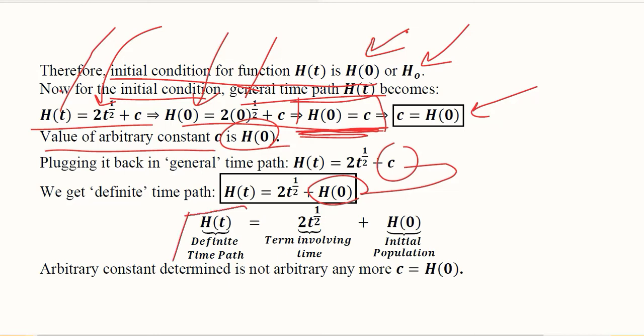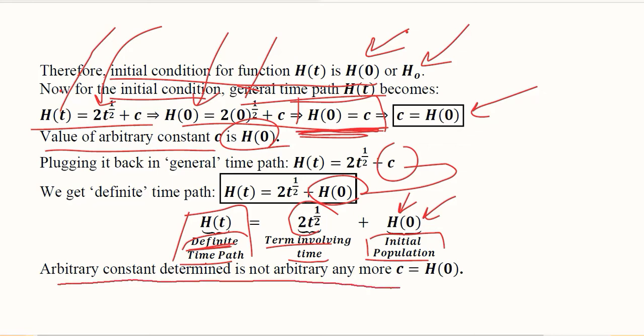The time path is now definite in nature because there is no arbitrary element in it. h₀ is the initial population level because it is the initial condition for h, which is population. That is why we now have a definite time path and not a general one. The other part — 2t raised to the power 1 over 2 — is the term involving time that gives rise to a varying graph. The arbitrary constant, now determined, is no longer arbitrary.